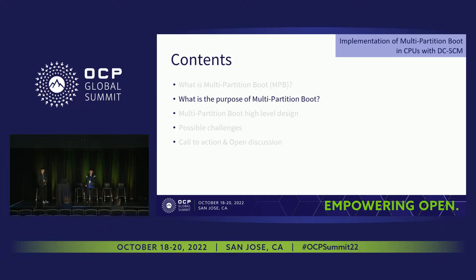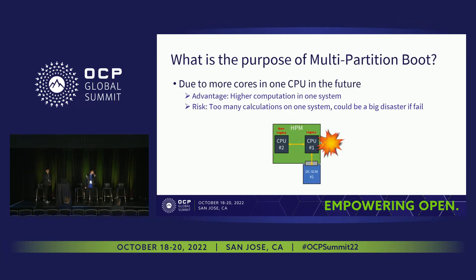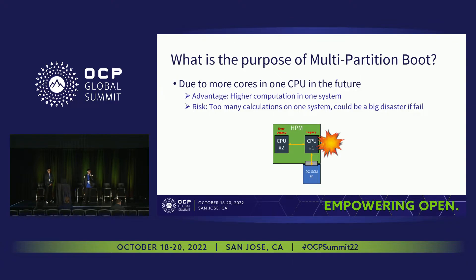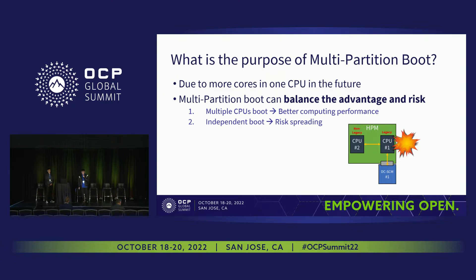Why are we designing this multi-partition boot and what are the advantages? There are more and more cores in one CPU, and we are going to support higher computation using multi-CPUs in a system. It has the advantage of getting higher computation with multi-CPU. But it also carries risk because concentrating too much on a multi-CPU system means that if one of your CPUs or your only DCSCM fails, the whole system will shut down — a big risk and disaster. The multi-partition boot could be the solution, as it provides a balanced advantage and also enables risk spreading.